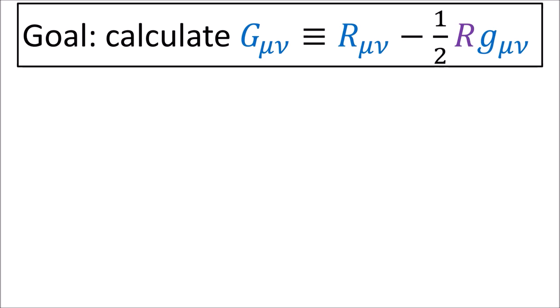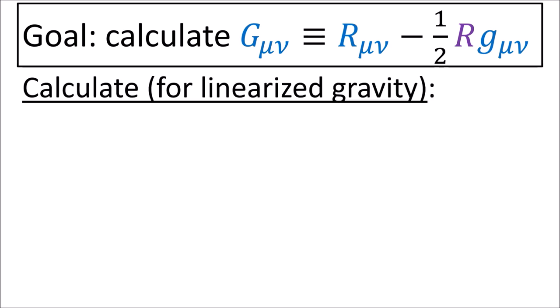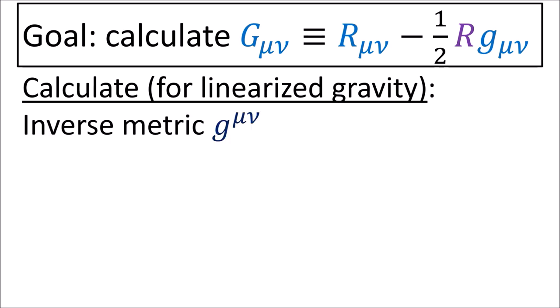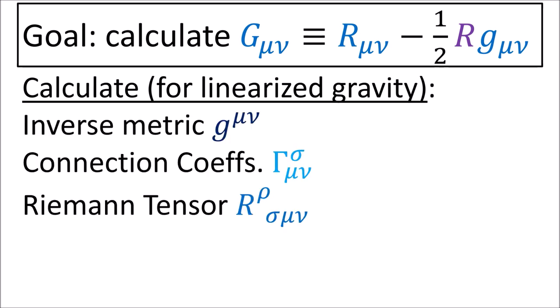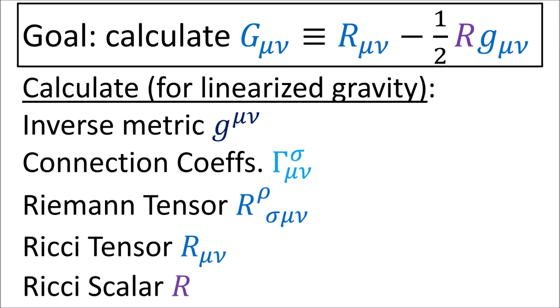Our goal for this video is to calculate the form of all the terms on the left-hand side of the Einstein field equations under the linearized gravity condition. This will involve calculating the inverse metric, the connection coefficients, the Riemann tensor, the Ricci tensor, and the Ricci scalar.